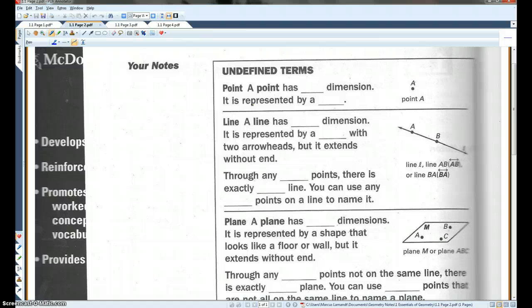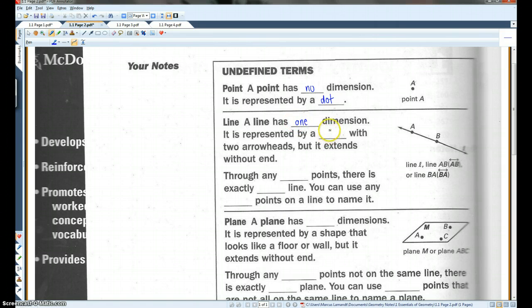Undefined terms. A point has no dimension. It is represented by a dot. Okay. A line has one dimension. It is represented by a line with two arrowheads, but it extends without end. Remember how I said it extends on forever? Through any two points, there is exactly one line. You can use any two points on a line to name it. Okay. So, like over here, this could be line AB or line BA, or you could name it line L.